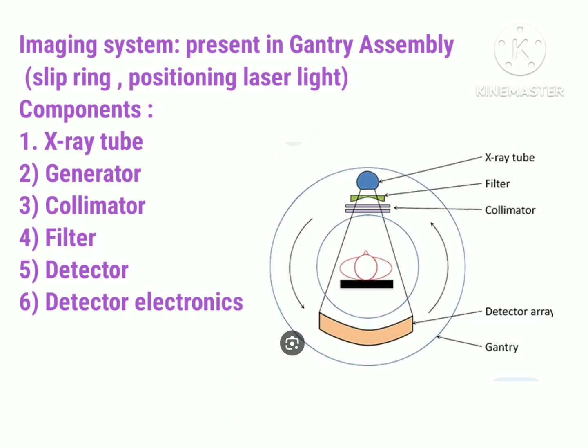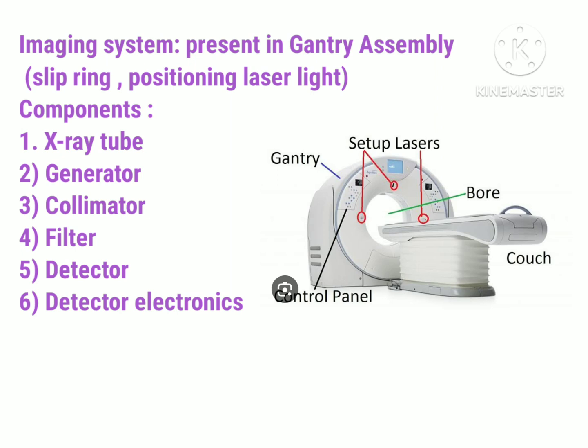The x-ray tube and generator both produce the x-ray beam. The collimator helps with the slice thickness of the image and also restricts scattered x-ray beams. The filter protects the patient from low energy x-ray beams and makes the beam uniform. The detector captures x-ray photons and converts them into an electrical signal. The detector electronics convert the electrical signal into digital form. This gantry assembly is a moving frame and the rotational components include the slip ring and the positioning laser lights.